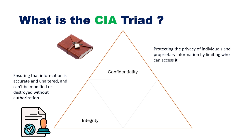Now let's look into integrity. Integrity is all about ensuring that the information is accurate and unaltered, and it cannot be modified or destroyed without authorization. Think about sending a recipe to a friend — you don't want someone sneaking in and replacing sugar with salt, right? So integrity ensures that your data is accurate and hasn't been tampered with.